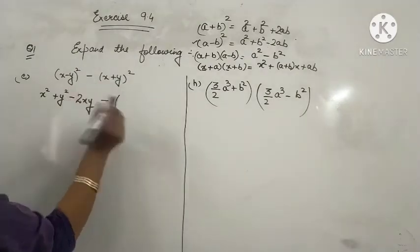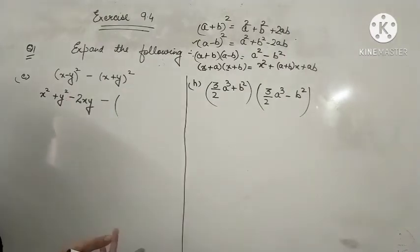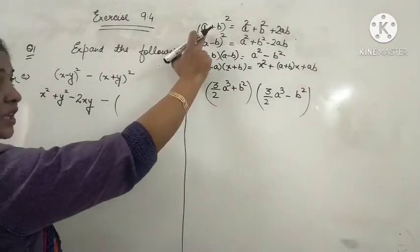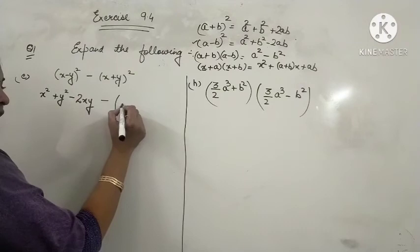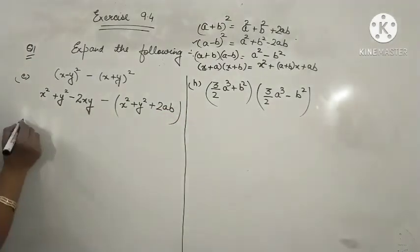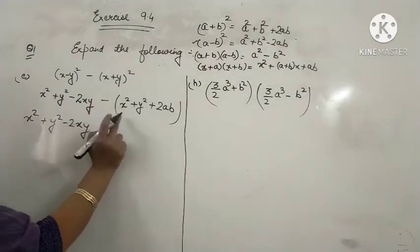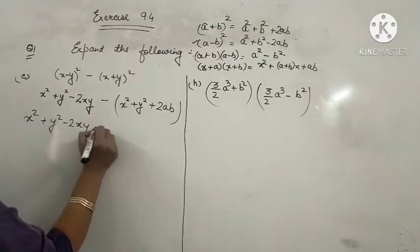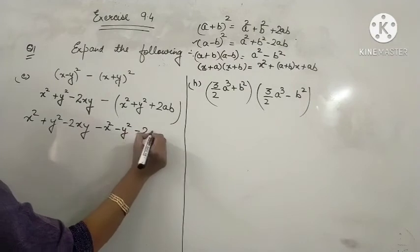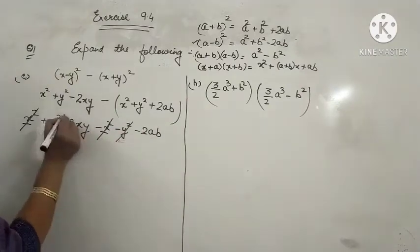In the next part I will take the expression in brackets because outside there is a minus sign that will change all the signs. First taking X plus Y whole square in brackets: it becomes X squared plus Y squared plus 2XY. In the next step we remove the bracket. The minus sign outside changes all the signs within: minus X squared minus Y squared minus 2XY. X squared positive and negative cancel out; Y squared positive and negative cancel out.